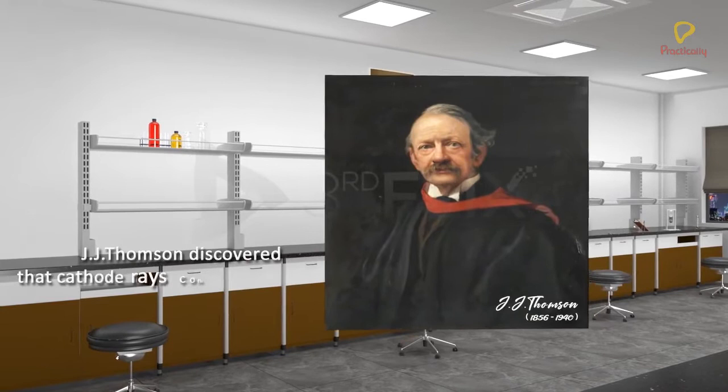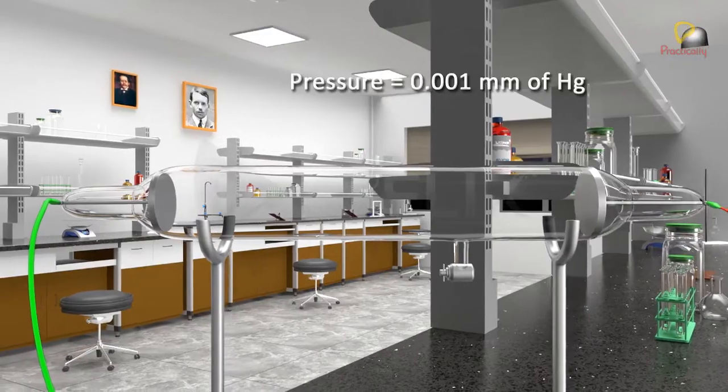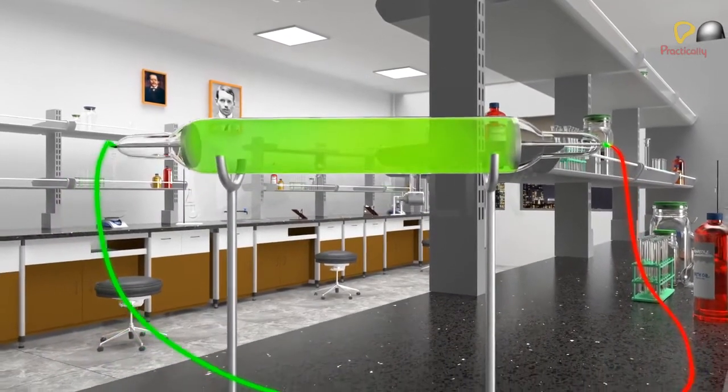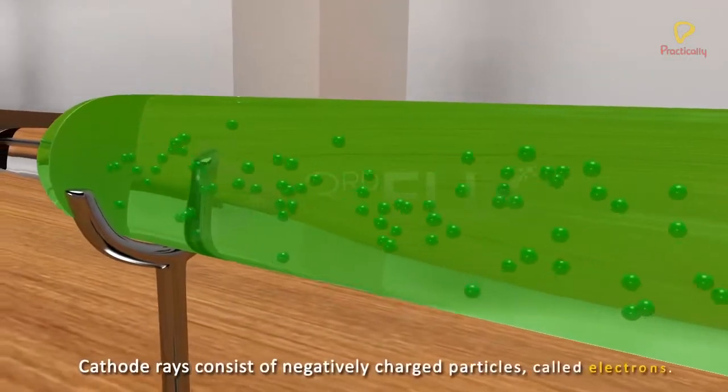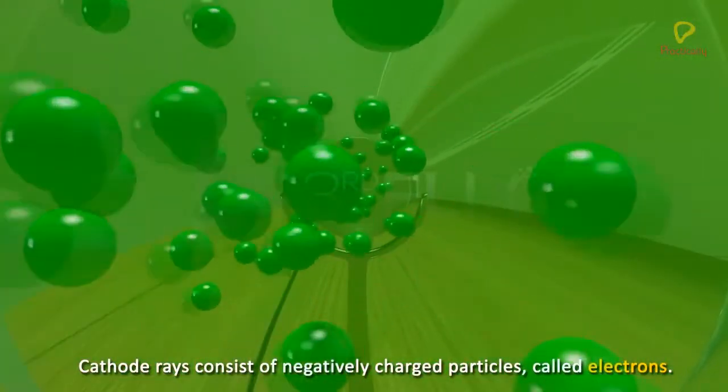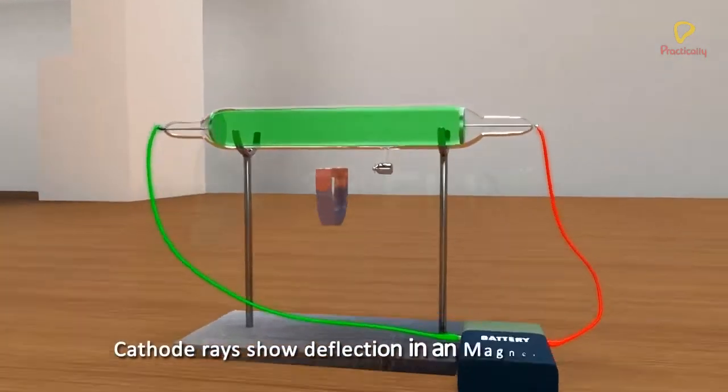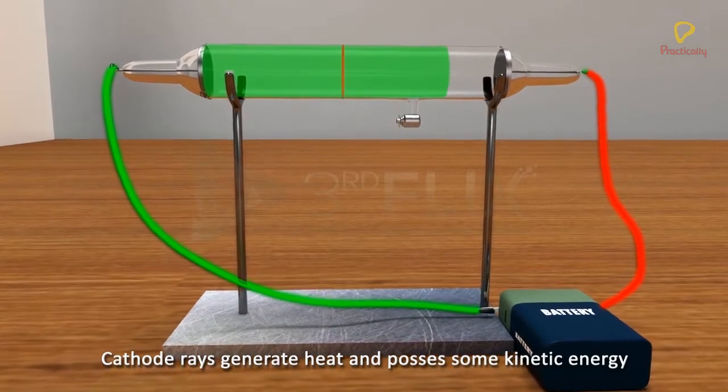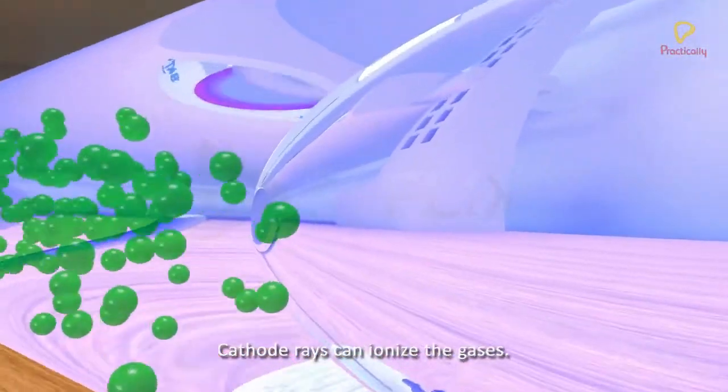To summarize: cathode rays consist of negatively charged particles called electrons. Cathode rays are produced at a pressure of 0.001 mm of mercury and a high voltage of 10,000 volts. Cathode rays are affected by both electric and magnetic fields. Cathode rays have kinetic energy and cause a heating effect. Cathode rays can ionize gases and have the power to penetrate. Electrons are considered to be the universal constituents of all matter.